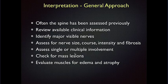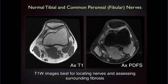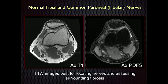You want a good idea of the clinical information to know what to target. Go through the exam and identify the major visible nerves, assessing them for size, course — is it smooth or is there angulation — nerve intensity, and whether there's any scar tissue around. Ask yourself if it's just one nerve involved or multiple. Look for mass lesions. And then look for sequelae like muscle edema or atrophy that could be related to denervation.